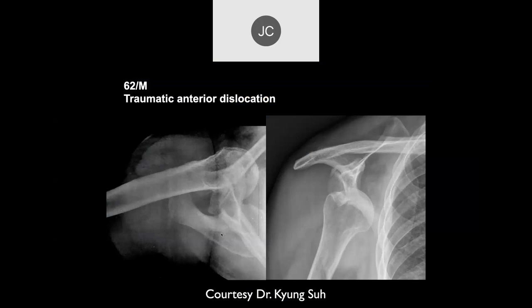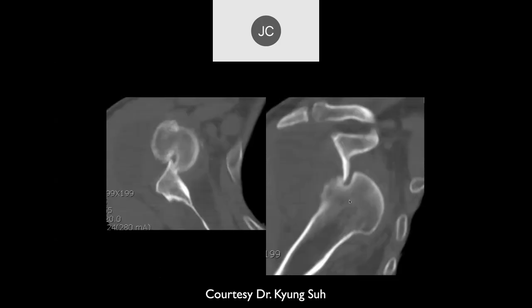Looking at this case — definitely abnormal. We have an anterior inferior dislocation of the humerus. You can see the mechanism of injury: the anterior dislocation of the humeral head, the muscles bang it back against the anterior inferior glenoid, producing the Hill-Sachs injury here on the plain film. This usually occurs with an outstretched arm — the patient falls and supports themselves with an outstretched arm.